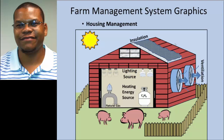The farm management graphics are simply graphical renderings of some of the universal components found within a respective management system. In this example, we see the housing management system graphic, which includes such things as lighting sources, heating energy sources, and barn insulation material. These are necessities commonly found in most barns. These graphics are provided for visual reference to the content discussed in the resource information and the farm flashcards, and they serve as a spatial aid to help students see how the individual components fit together to make up each system.